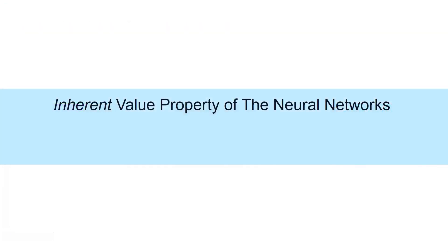To do so, Leconic leverages an inherent value property of neural networks, the bit sparsity. The bit sparsity is evident in DNNs.